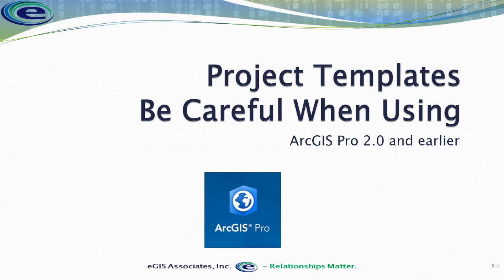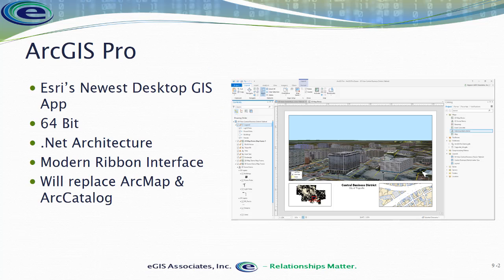This applies to ArcGIS Pro 2.0 and earlier. For those that may not be aware, ArcPro is Esri's newest desktop GIS application that's entirely 64-bit, built on a .NET architecture. This is a big difference from ArcMap and ArcCatalog, which were 32-bit COM architecture applications.